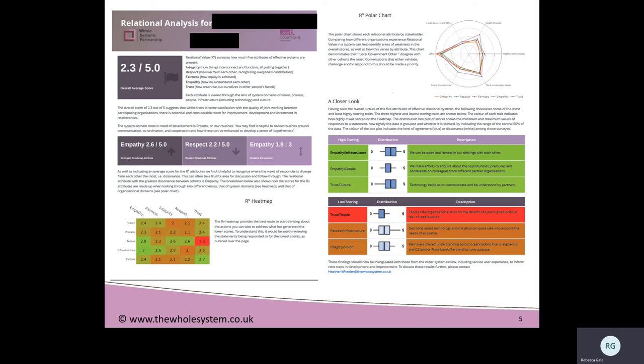I'm not going to go into the science behind it, but if you want to know more, please use the reading materials listed earlier or get in touch with us. These numbers here out of five correspond to the relational value against the five attributes to effective system working, evidenced by a set of behaviours. These attributes are: system integrity — how things interconnect and function, all pulling together; respect — how we treat each other and recognise everyone's contributions; fairness — how equity is achieved; empathy — how we understand each other; and trust — how much we put ourselves in other people's hands. The relational value is a product arising from a consistent pattern of behaviours and is something that exists between individuals, groups, and organisations, and is therefore a feature of the system, not just the constituent parts.